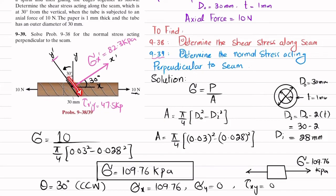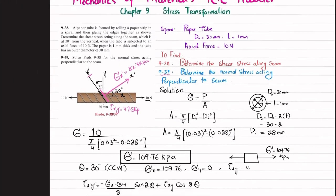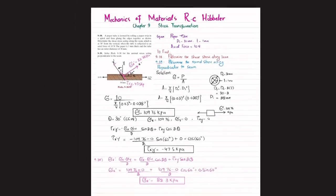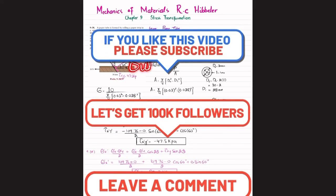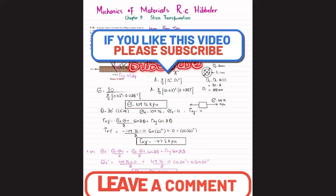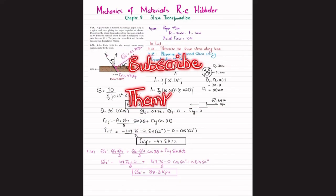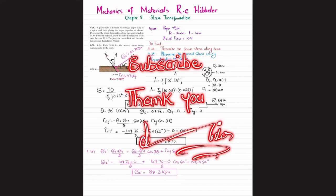To summarize: the shear stress along the seam is 47.5 kPa, and the normal stress acting perpendicular to the seam is 82.3 kPa. That was all about problems 9-38 and 9-39. I hope you enjoyed this video and learned from it. If you are new to my channel, please subscribe and hit the bell icon for notifications. If you have any questions, ask in the comment section. Thank you for watching.